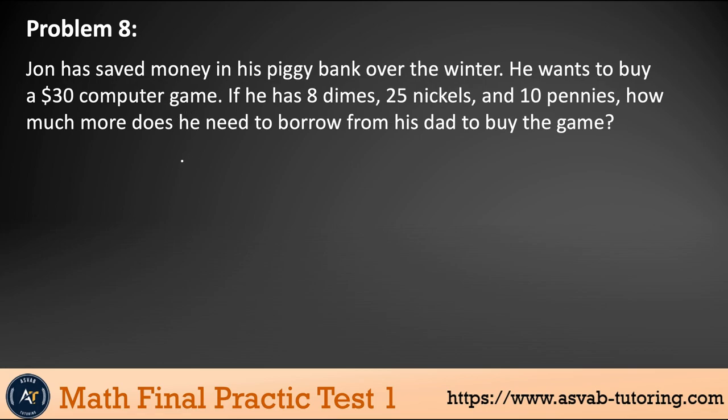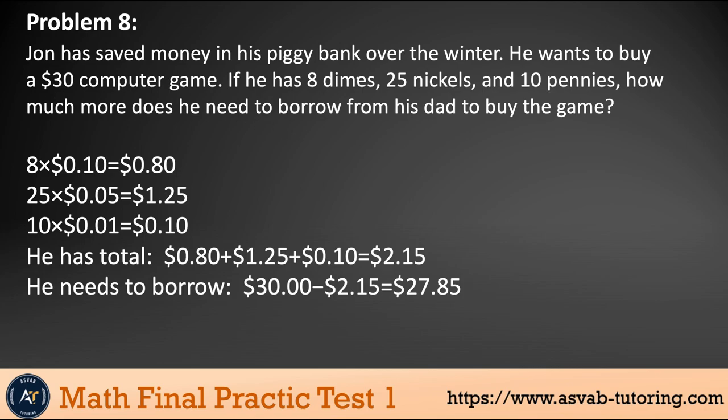Next problem: John has saved money in his piggy bank over the winter. He wants to buy a $30 computer game. If he has eight dimes, 25 nickels and 10 pennies, how much more does he need to borrow from his dad to buy the game? It's very simple. Eight dimes—eight times 10 gives you 80 cents. 25 nickels—25 times 0.05 gives you $1.25. He has also 10 pennies—10 times 0.01 gives you 10 cents. If you add them up, that gives you $2.15, but he needs $30. If you subtract from 30, that gives you $27.85.